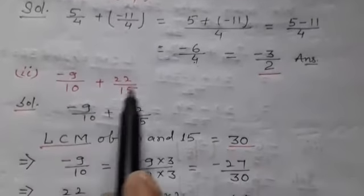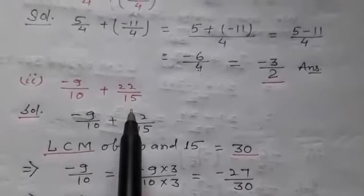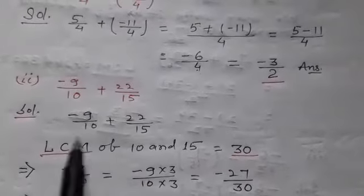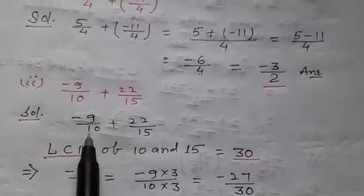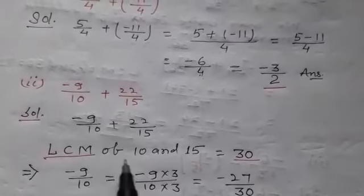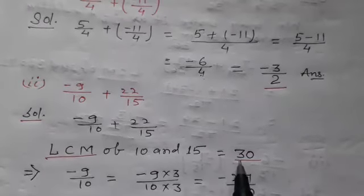Second is: −9/10 plus 22/15. Find the LCM of the denominators, which is 30.